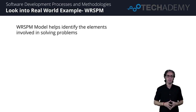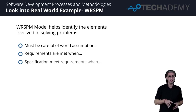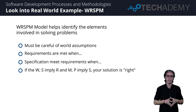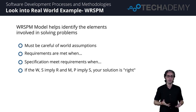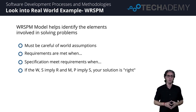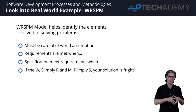Let me summarize today's session. The WRSPM model helps identify the elements involved in solving the problems. We have to be very careful when it comes to the world assumptions. The requirements are met when these assumptions are true, and the specifications meet those requirements when and only when these assumptions are held to be true. From a formal standpoint, if W and S — the world assumptions and the specifications — imply these requirements are met, and the machine and the program imply that the specification has been met, only then will your solution stand to be correct. Most of the problems lie in that definition — it's that W and S which will imply R.